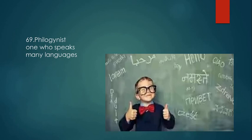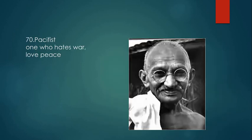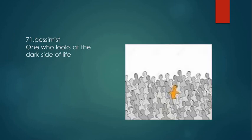Polyglot is one who speaks many languages. Multilingual people can be called polyglots — apparently in India a lot of people are multilingual, especially in the southern part of the country. Pacifist is one who hates war and loves peace — like Mahatma Gandhi, a person who wants a peaceful way of resolving any argument is called a pacifist. Pessimist is one who looks at the dark side of life — even when good things happen, they will always see the negative side.